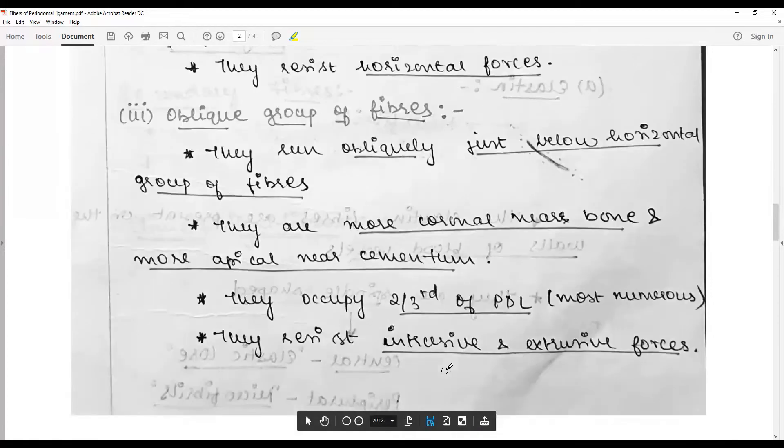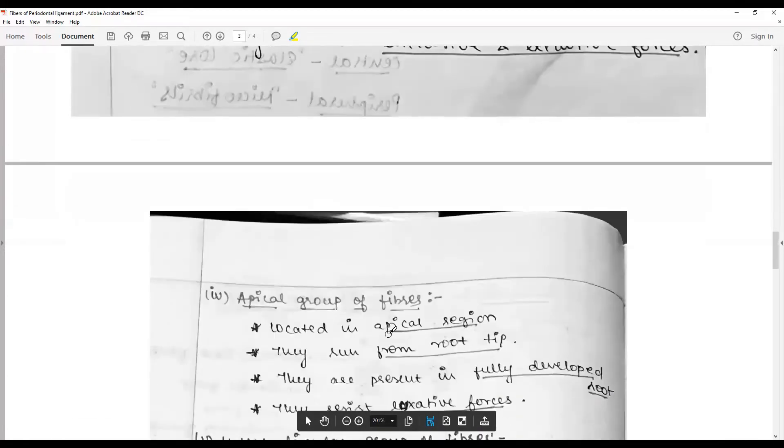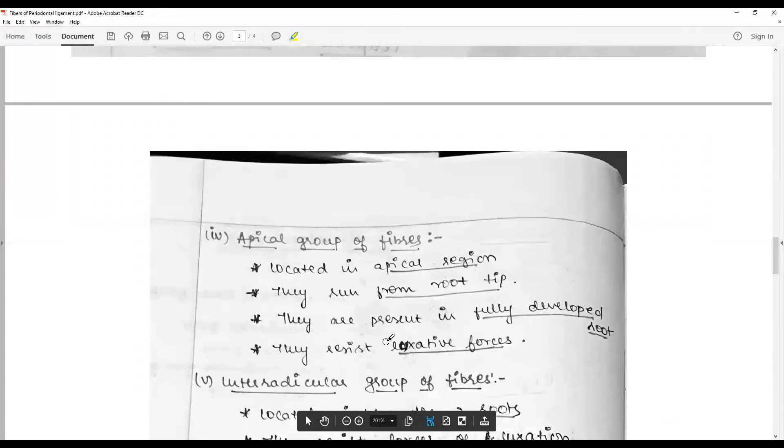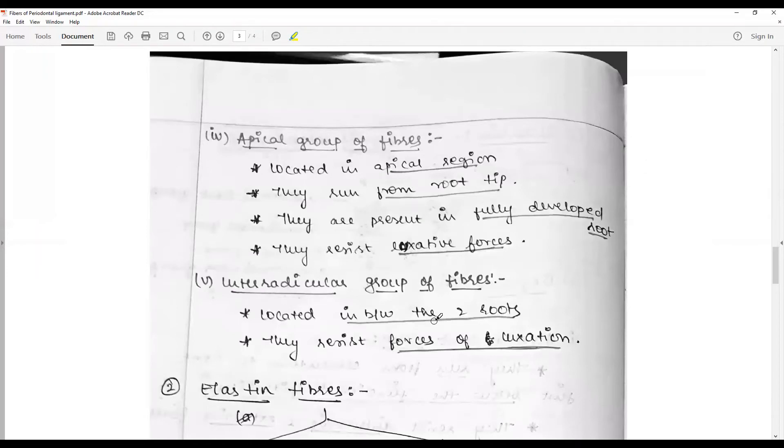Apical group of fibers are located in the apical region and run from the root tip. They are present only in fully developed teeth and resist luxative forces. Interradicular group of fibers are located in between two roots and resist forces of luxation.